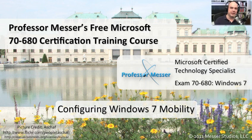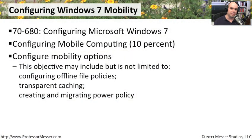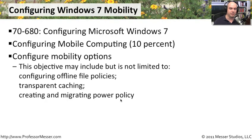Welcome to this module of Professor Messer's free Microsoft 70-680 certification training course. This module is on configuring Windows 7 mobility. I'm James Messer, and in this module we're going to go through the requirements from the section of the 70-680 exam on configuring mobile computing. This is 10% of your exam requirement. We need to understand how to configure offline file policies, transparent caching, and how to create and migrate a power supply configuration for your mobile device.